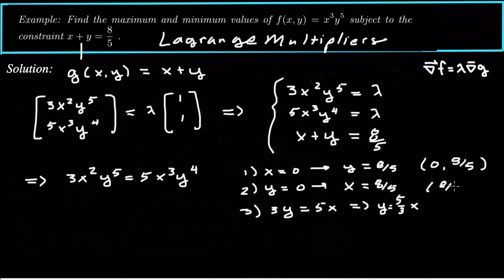So that would be 8 fifths, 0. And then the last one, let me plug in y equals 5 thirds x right here into this last equation. So x plus 5 thirds x would equal 8 fifths. So that would tell me that 1 plus 5 thirds times x would equal 8 fifths. So then 1 plus 5 thirds is 8 thirds, so 8 thirds x equals 8 fifths.